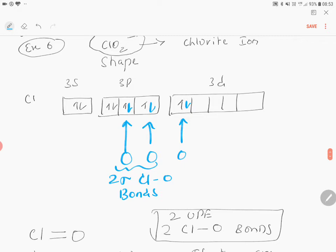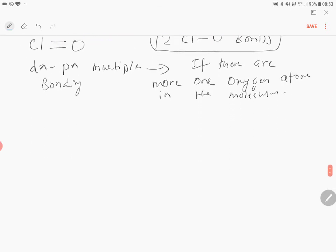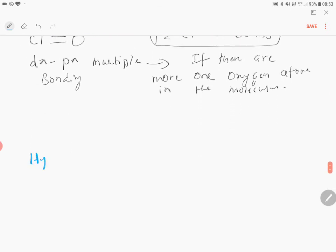Next, one of the oxygen possesses a double bond. So this is your d-pi p-pi, one d-pi p-pi multiple bonding. Therefore the hybridization is sp3. When the hybridization is sp3...